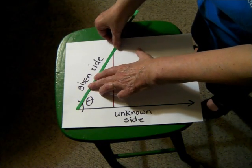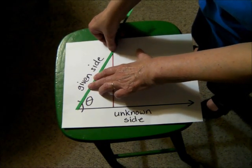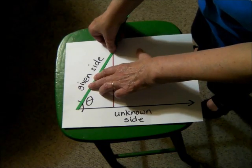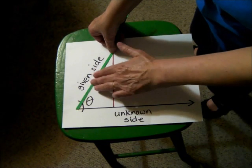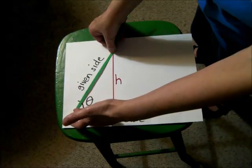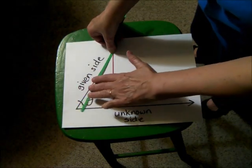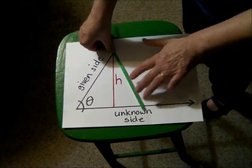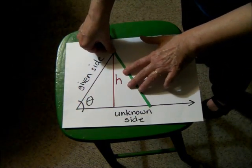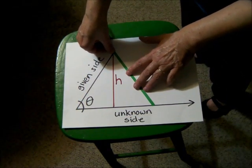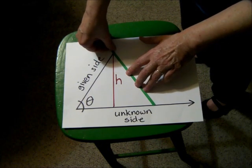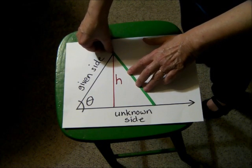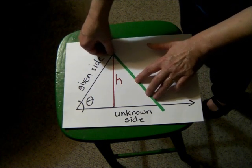Now we can only get a triangle if we swing the opposite side to the right. Even if we make it longer, we can always swing it to the right and get one triangle.